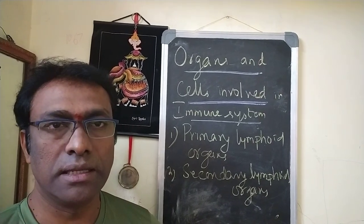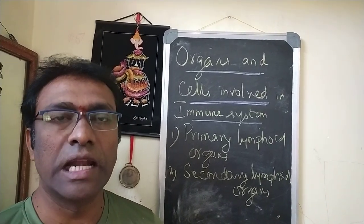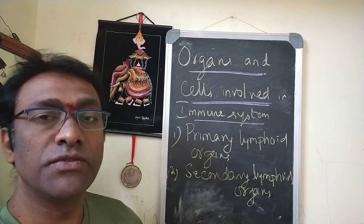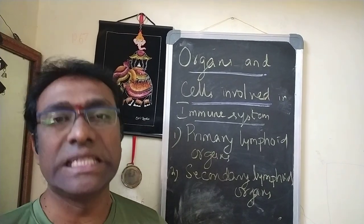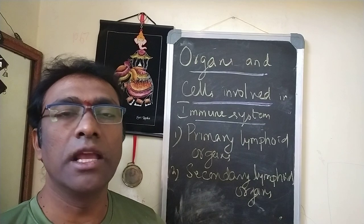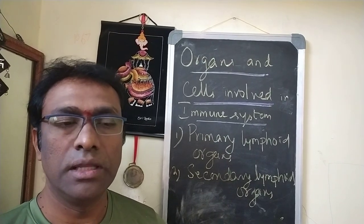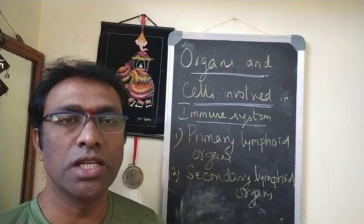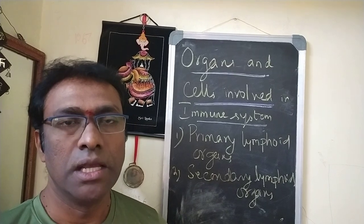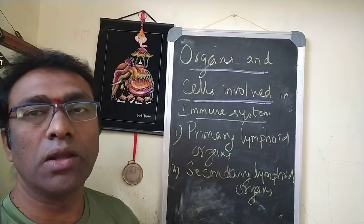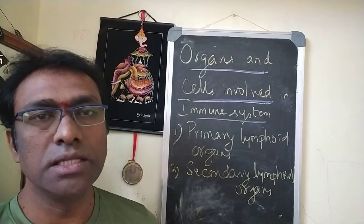We will be learning about those things in further classes. For today, we will learn the different types of organs and cells. When we talk about cells, we will include the granulocytes and agranulocytes. I will show you all the slides in the form of a classification and description. So shall we go for the first part of the topic — the organs involved in the immune system.